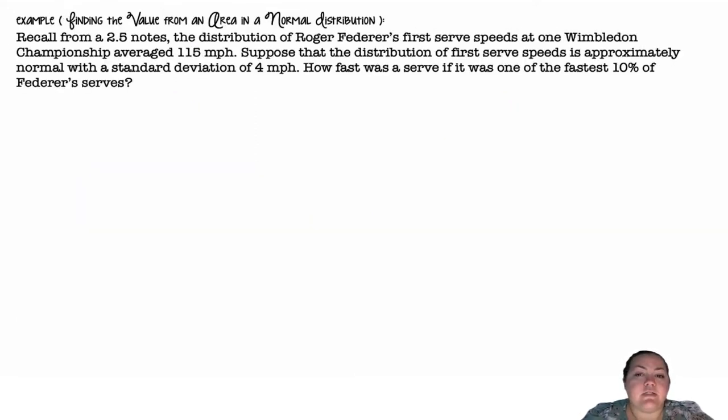Recall from the 2.5 notes, the distribution of Roger Federer's first serve speeds at the Wimbledon championship averaged 115 miles per hour. Suppose that the distribution of first serve speeds is approximately normal with a standard deviation of 4 miles per hour. How fast was a serve if it was one of the fastest 10% of Federer's serves?